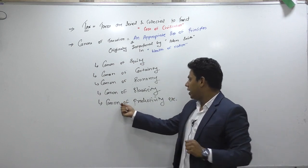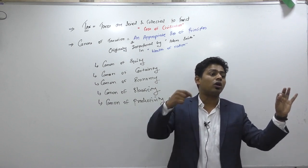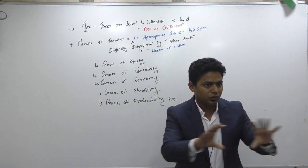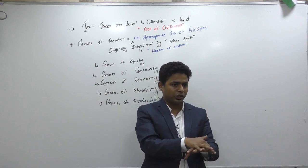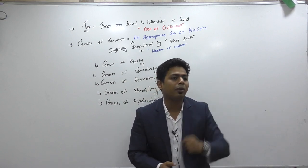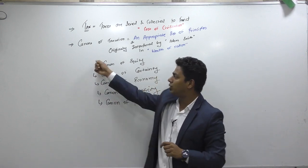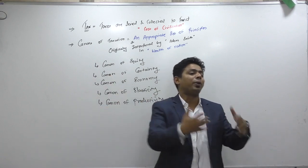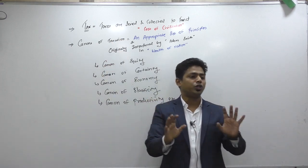Canon of productivity means taxation should not hurt the economy. Taxes should not kill the productivity of the nation — they have to enhance it. That's why the government gives a basic exemption limit to all industries and provides tax incentives to the SME sector — small and medium enterprises — so that sector gets a lot of benefit through taxation. These canons are the logic behind why tax law operates the way it does.